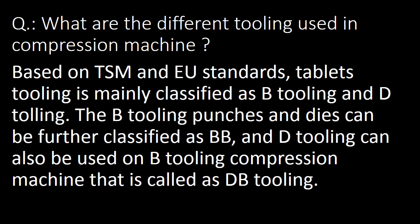Next question: what are the different toolings used in a compression machine? Based on TSM and EU standards, tablet toolings are mainly classified as B tooling and D tooling. B tooling punches and dies can be further classified as BB tooling, and D tooling can also be used on a B tooling compression machine, which is called DB tooling.